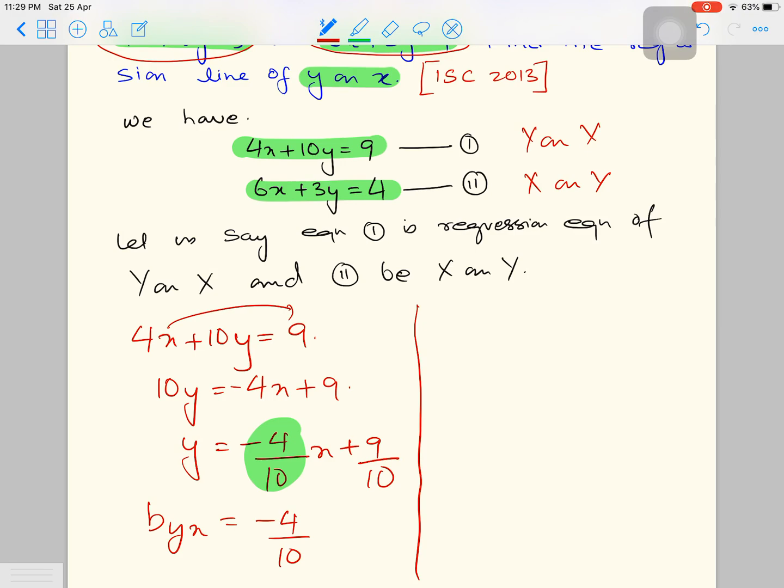Similarly, on the other side, I can extract b_xy from the second equation. So I will transpose y to the other side and extract b_xy from the second equation. So b_xy equals to minus 3 by 6, which is minus half.